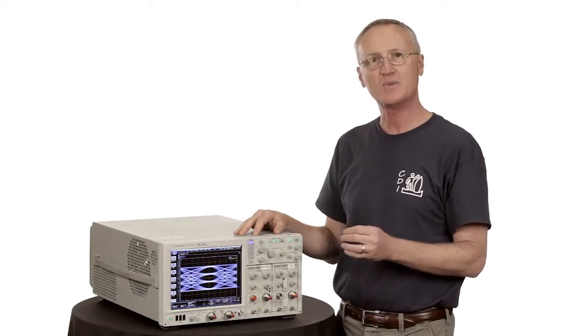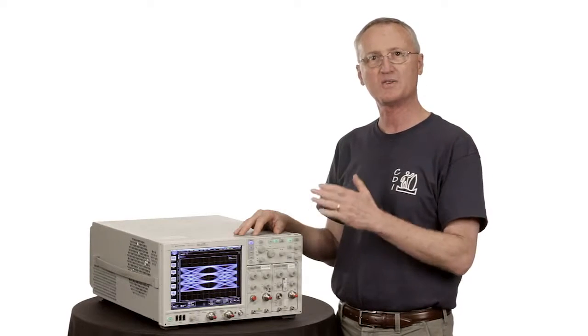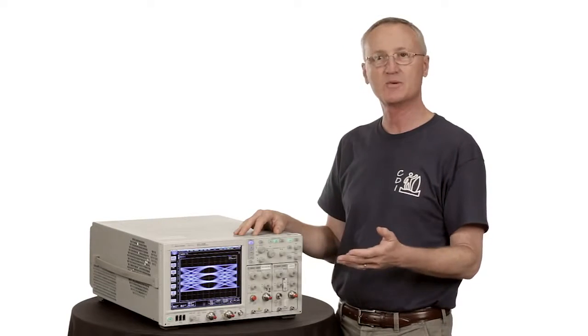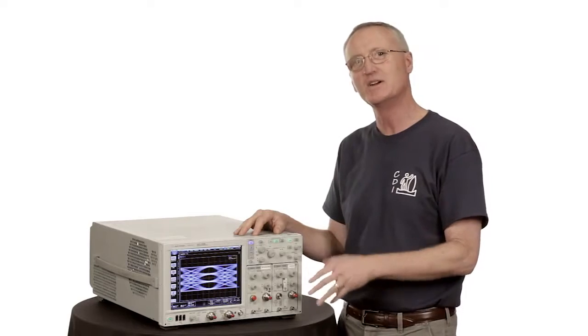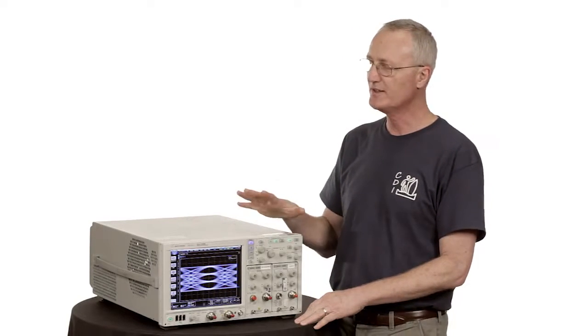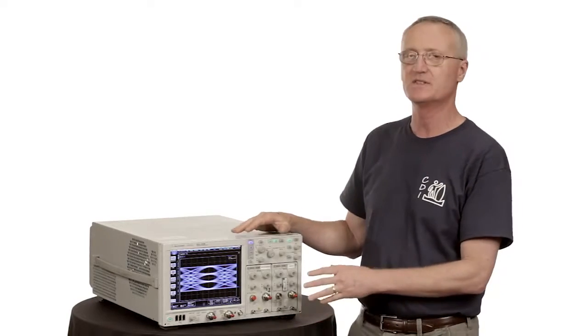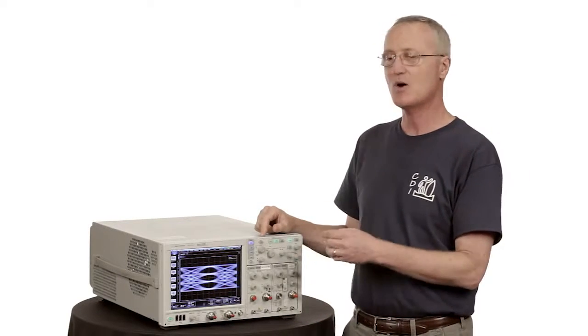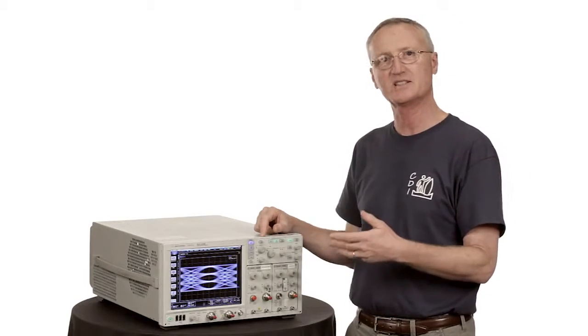It turns out not much. The hardware responds to edges. The edges come through in a PAM-4 signal similar to the way they did in an NRZ signal. Really, the only difference is that we have to tell the DCA not what the bit rate is, but in this case the baud rate.